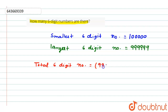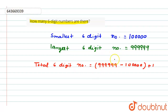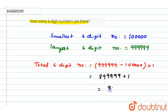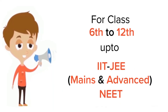So, total 6-digit numbers = largest number minus smallest number plus 1. We add 1 because we need to include one of the boundary numbers. So, 999999 minus 100000 plus 1 equals 900000. Hope you got the answer, thank you.